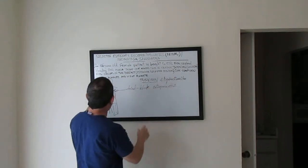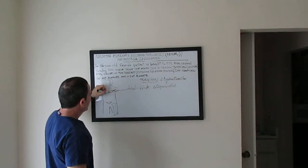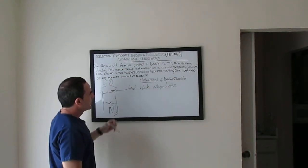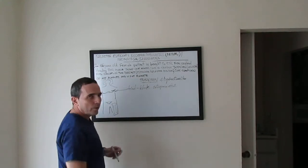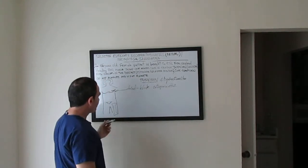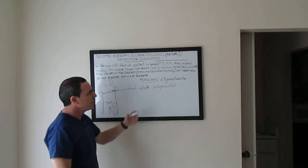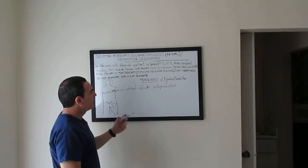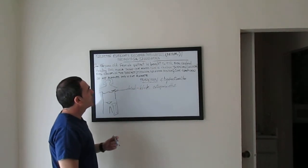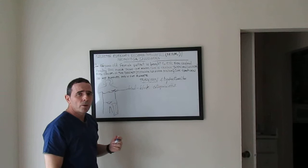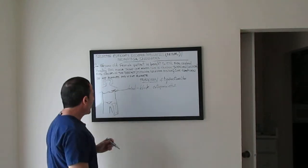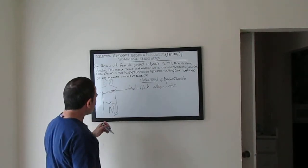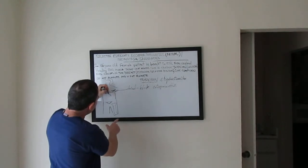This blocks the growth of the cancer in the breast tissue. But tamoxifen and other selective estrogen receptor modulators also have other actions — they have agonist effects in certain tissues.